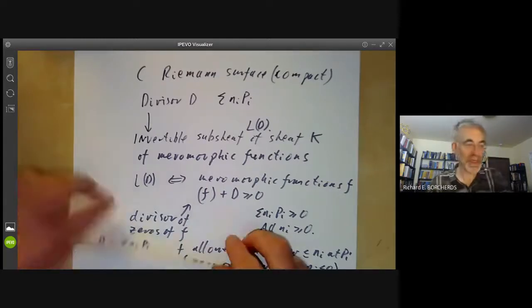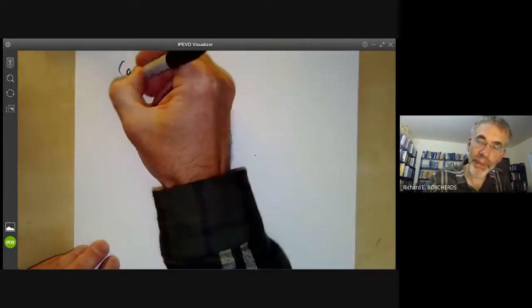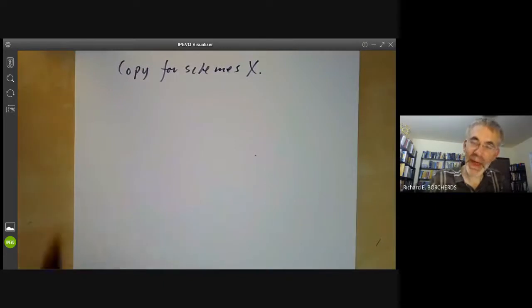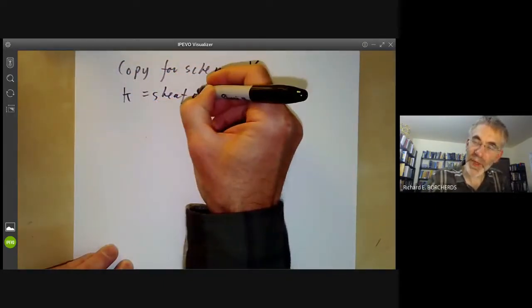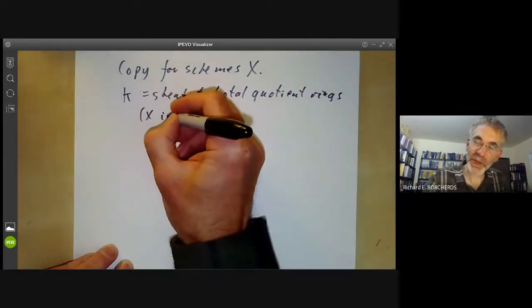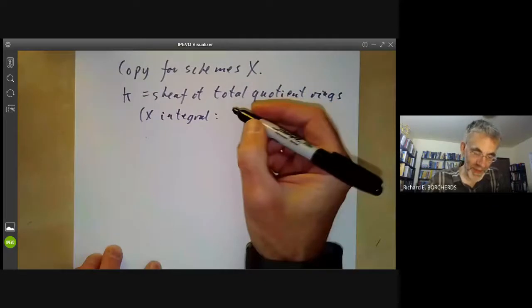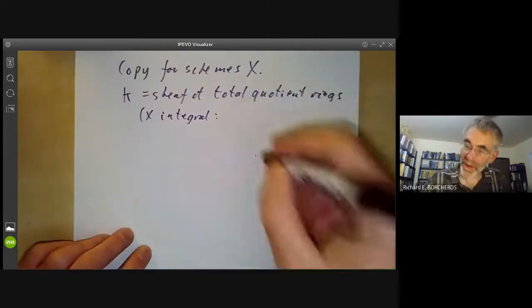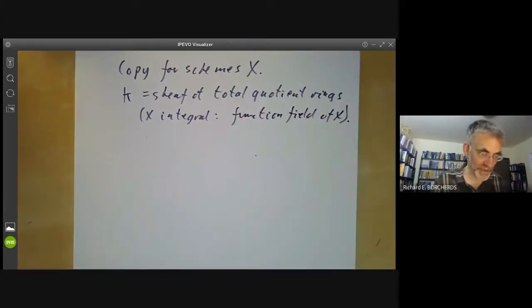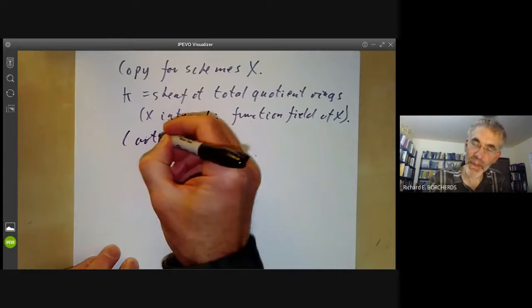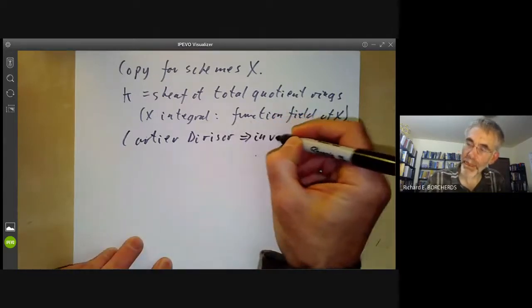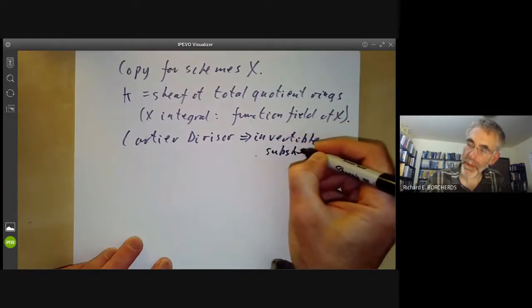Now we want to copy this for schemes. K is going to be the sheaf of total quotient rings, which for X integral is more or less the constant sheaf of the function field of X, which most of the time is what we will do. We take a Cartier divisor and turn it into an invertible subsheaf of K.